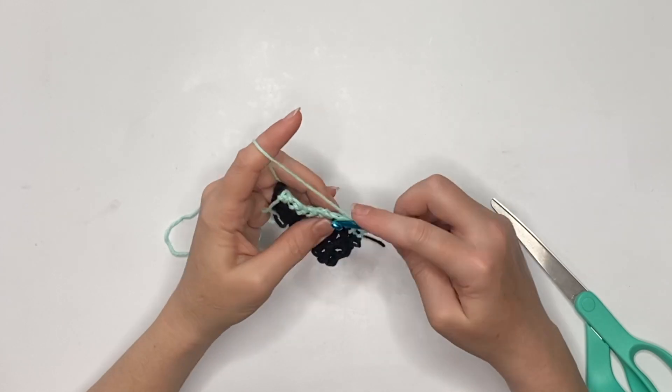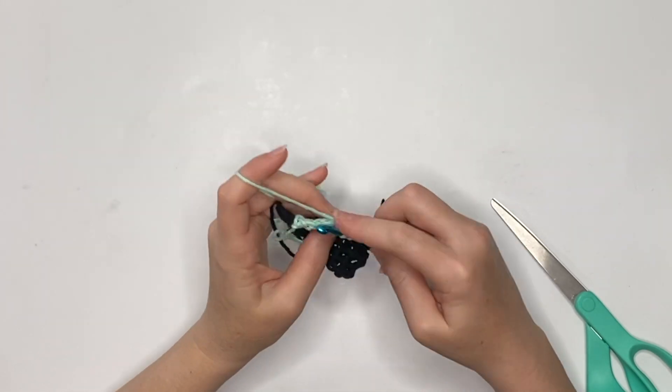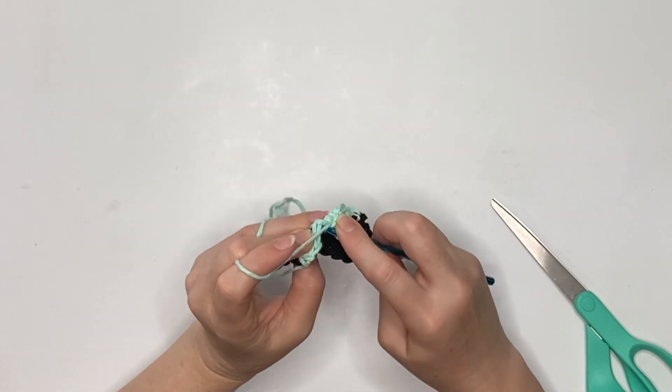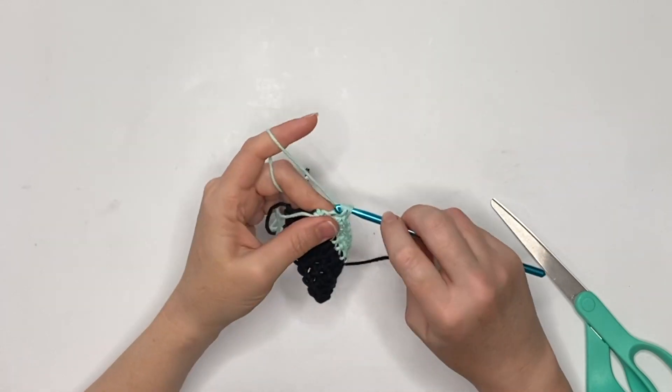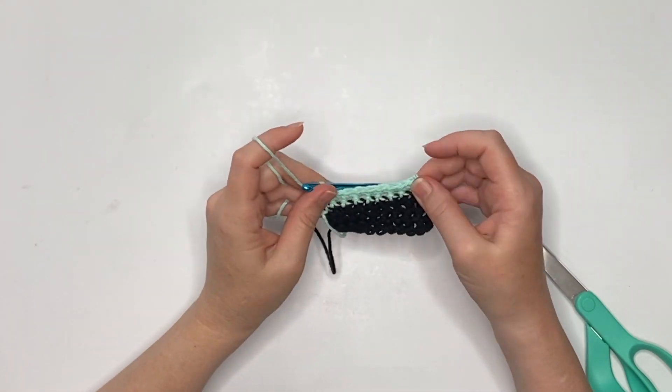Once you've got that first row of the color B, go ahead and chain one and do another row across of nine stitches in the same color and then fasten off.